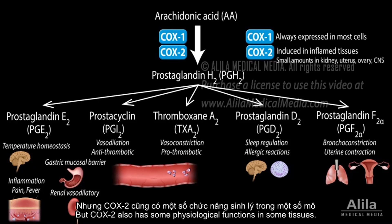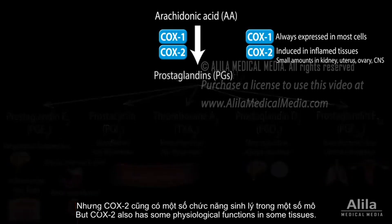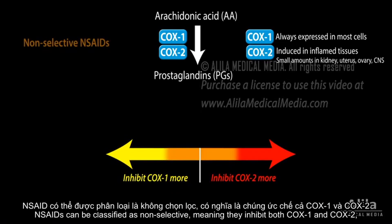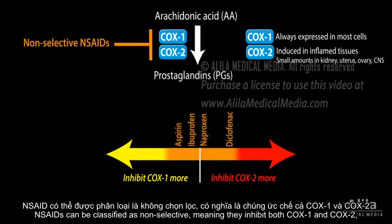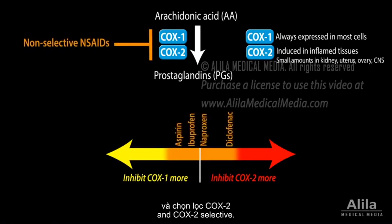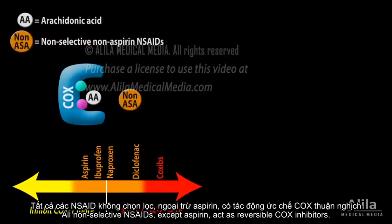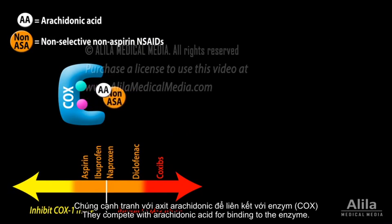COX2 also has some physiological functions in some tissues. NSAIDs can be classified as non-selective, meaning they inhibit both COX1 and COX2, albeit with different efficiencies, and COX2-selective. All non-selective NSAIDs, except aspirin, act as reversible COX inhibitors. They compete with arachidonic acid for binding to the enzyme.